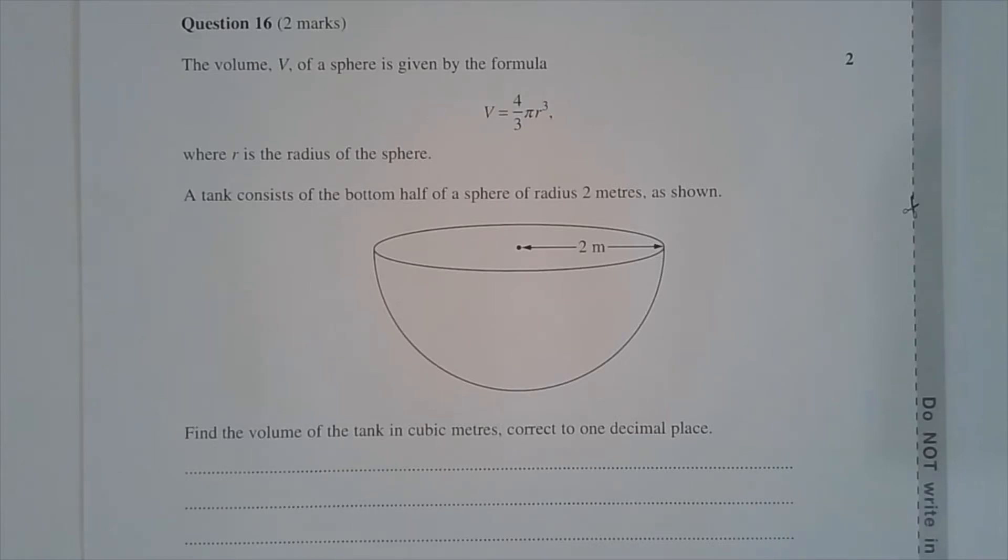Where r is the radius of the sphere. A tank consists of the bottom half of a sphere of radius 2 meters, as shown.